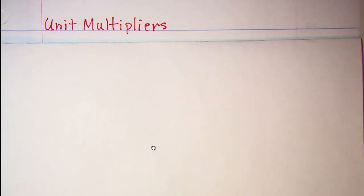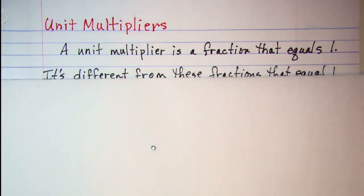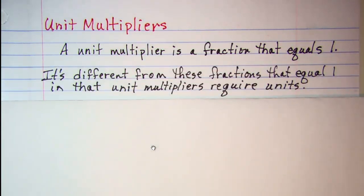In this video we'll be talking about unit multipliers. A unit multiplier is a fraction that equals one. Now this is different from fractions that equal one in that unit multipliers require units.